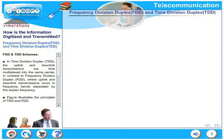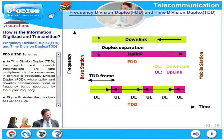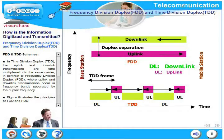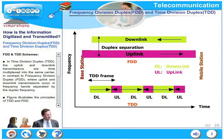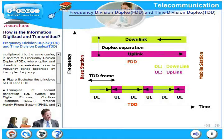Let us look at another interesting concept: FDD and TDD. FDD is frequency division duplex and TDD is time division duplex. In time division duplex, the uplink and downlink transmissions are time multiplexed into the same carrier, in contrast to frequency division duplex where uplink and downlink transmissions occur in different frequency bands separated by a duplex frequency.